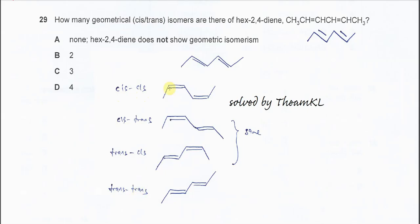If we want to make the cis-cis isomers, we have to arrange like this. For the first double bond, the two larger groups are now on the same side — so this is a cis arrangement. And for the second double bond, the two larger groups are also on the same side. So it's a cis-cis configuration.